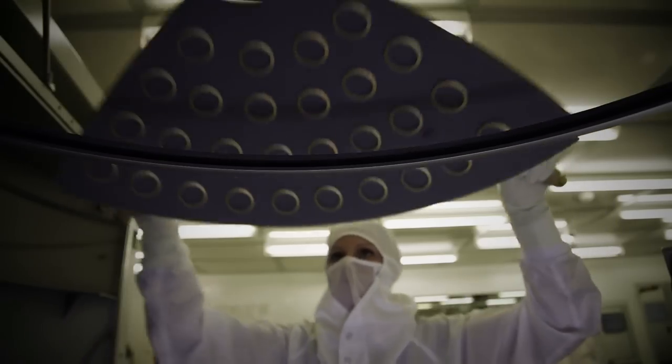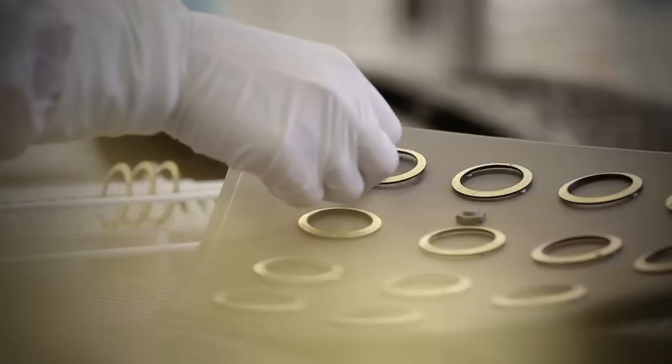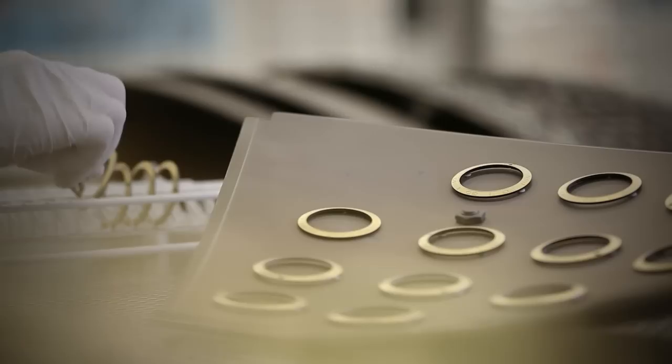In a clean room, a conductive layer is deposited on the top surface and in the engraved cavities. This allows the growth of a gold layer during the electroforming process.